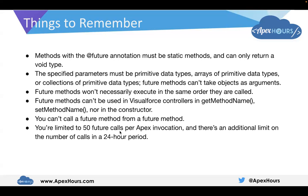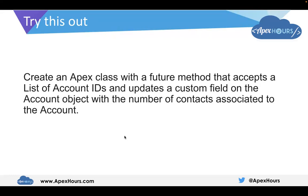You are limited to 50 future calls per Apex invocation, and there is an additional limit on the number of calls in a 24-hour period. For your assignment on future methods, create an Apex class with a future method that accepts a list of account IDs and updates a custom field on Account called 'Number of Contacts', updating it with the number of contacts associated to that account.